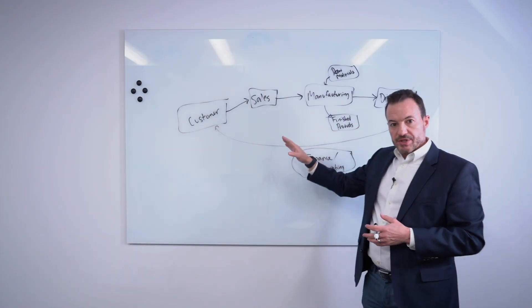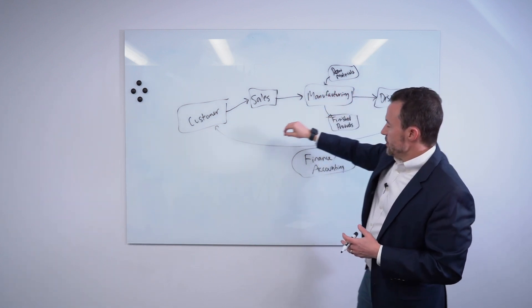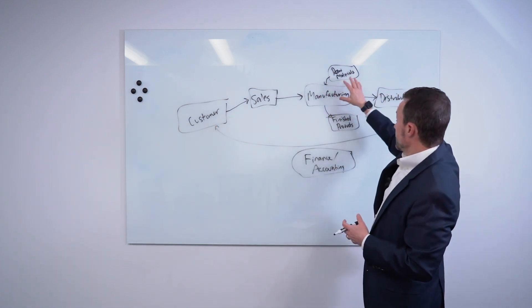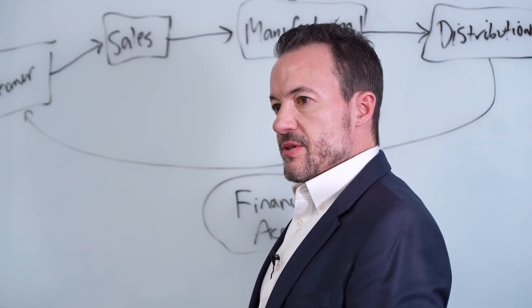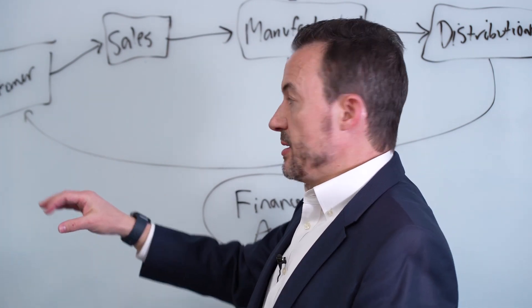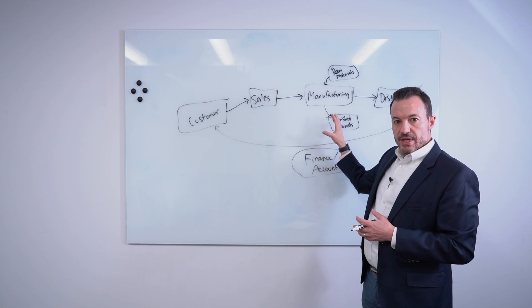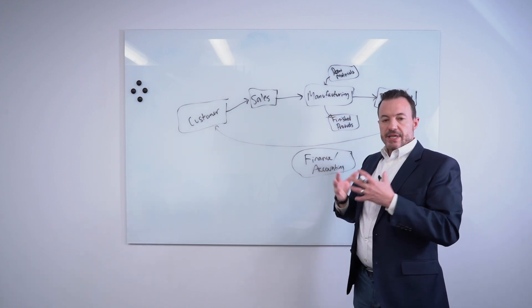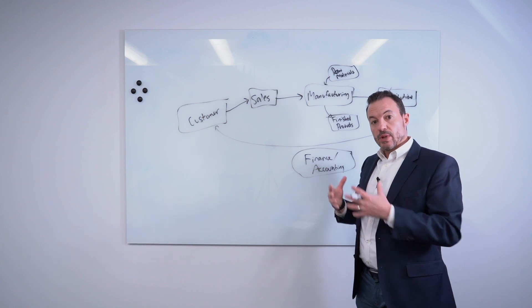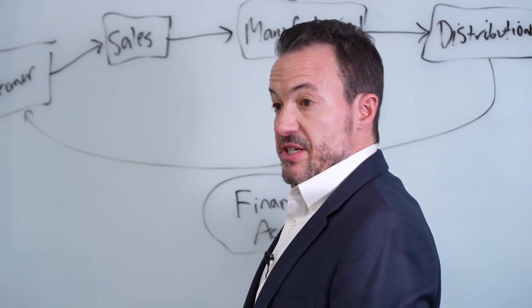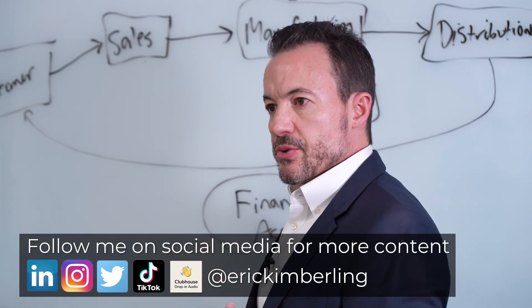Another thing AI allows us to do, and this takes big data one step further, is yes, we have data within the organization. Yes, we have data coming from customers. We have data coming from suppliers. But what about external third party data points? Could we be using third party data to augment the data we have collected here within our organization to use AI to really take it to the next level in terms of planning and estimating what we think will happen in the future?